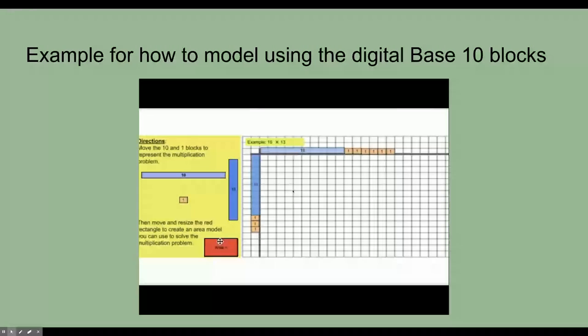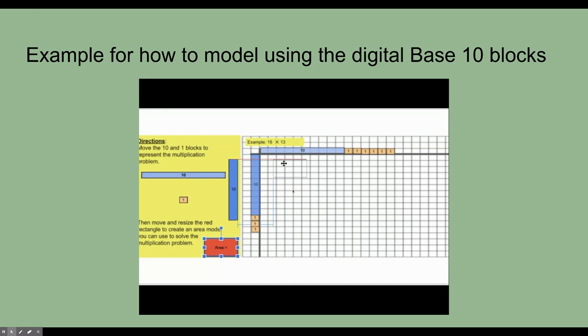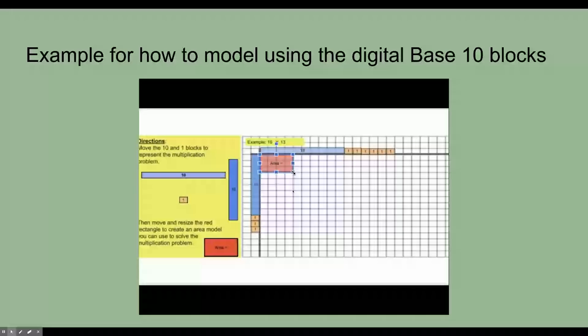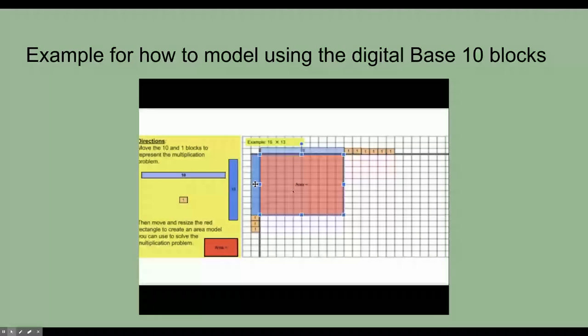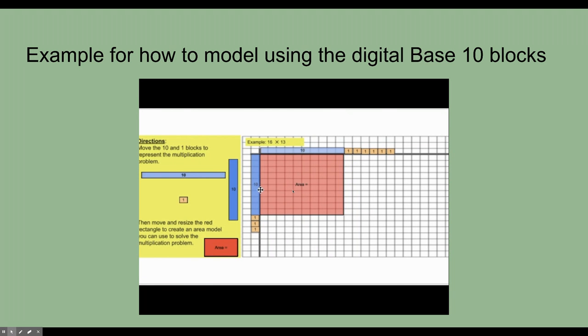So I want to find first the rectangle that's created from the base and the height of the 10 blocks. So I put my red block and then I'm going to stretch it so that its base is 10 units and its height is also 10 units. So again, this rectangle is formed by the two 10 blocks.